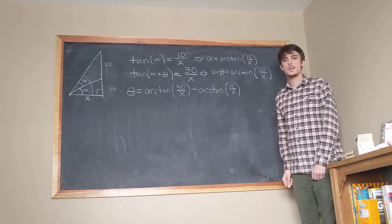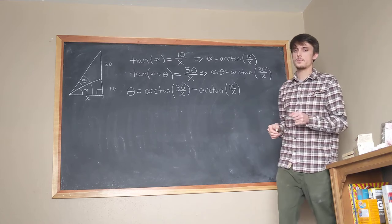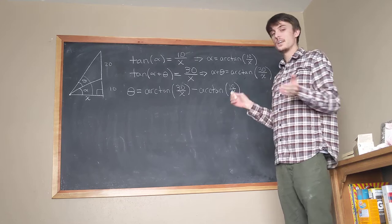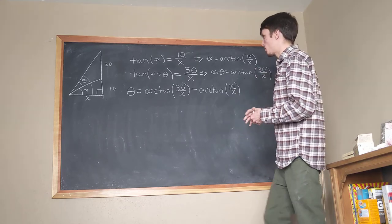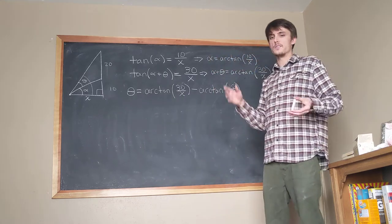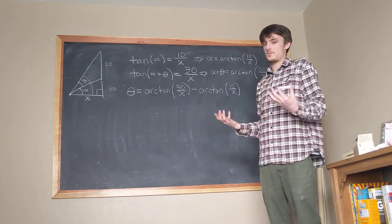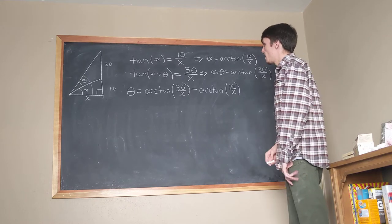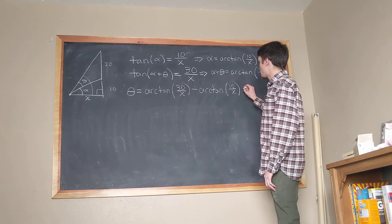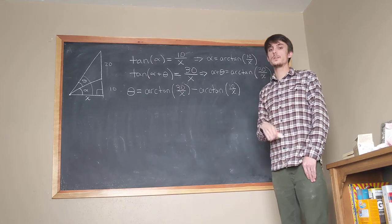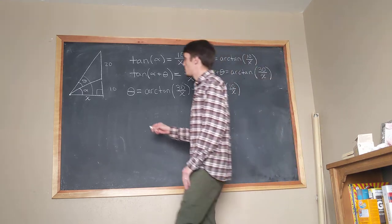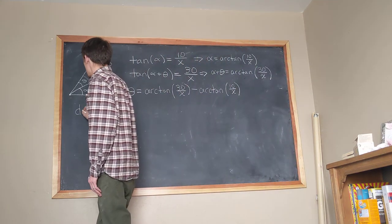We now have an equation for theta, and that's about as good as it gets. We're not looking for the maximal value of theta itself — we're looking for the x that maximizes it. To find that, we need critical points, which means we need a derivative. So the next step is to calculate dθ/dx.